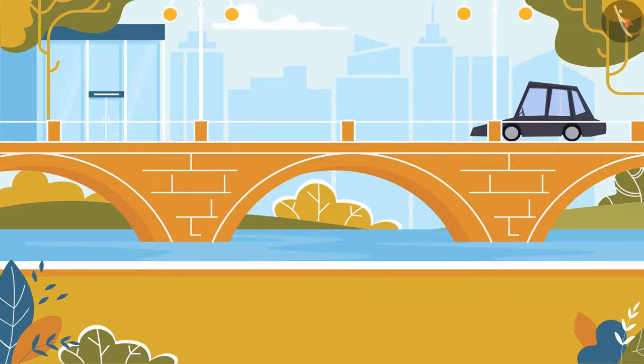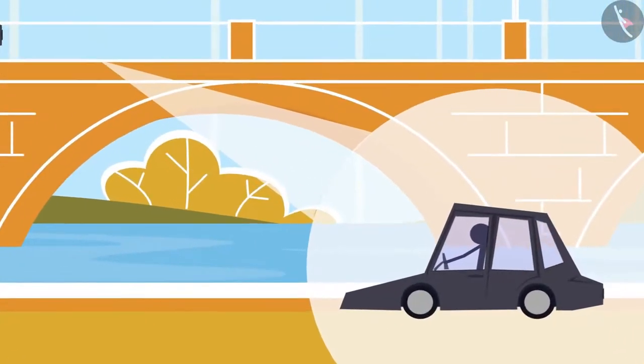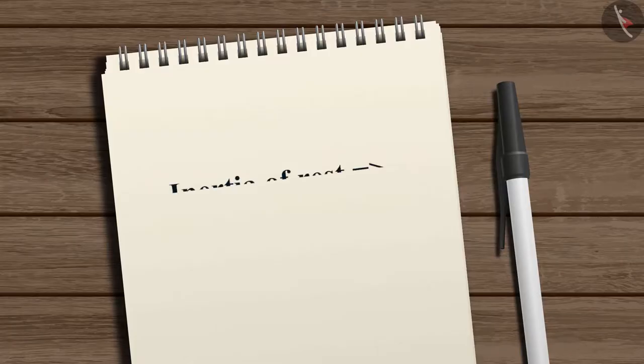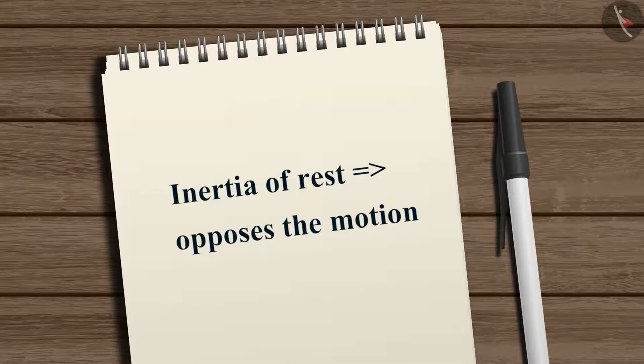Let us consider an example of a car. If it suddenly starts moving, your upper body tends to move backwards. This is due to the inertia of rest of our body which opposes the motion and hence does not let our upper body move forward. But the lower body which is in contact with the car moves forward along with the car when the car starts.